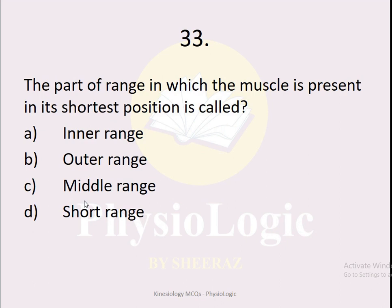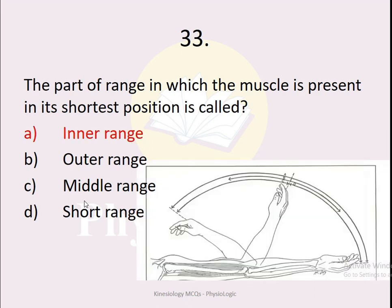MCQ number 33: The part of the range in which the muscle is present in its shortest position is called — inner range, outer range, middle range, or short range. The correct option is inner range. For the biceps, the inner range is its shortest position, followed by middle range and outer range. For the triceps, the inner range is where the tricep is maximally shortened. So the ranges vary depending on which muscle you are referring to.